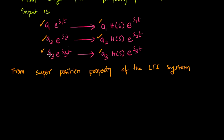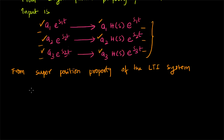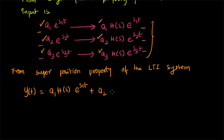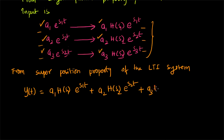The superposition principle of the LTI system says that if you are adding the inputs, you will get the output as a sum of these responses. So we can write y(t) = a1·H(s1)·e^(s1·t) + a2·H(s2)·e^(s2·t) + a3·H(s3)·e^(s3·t).